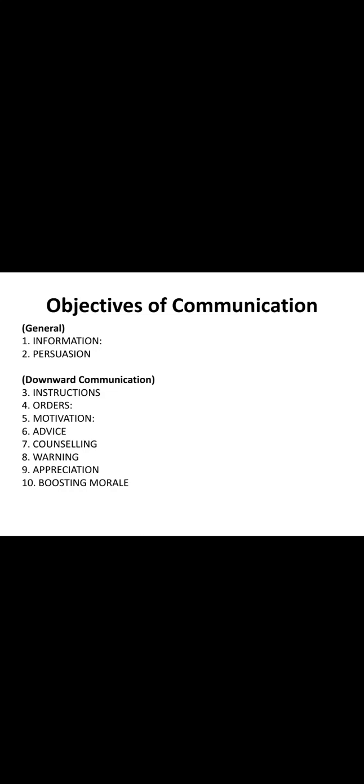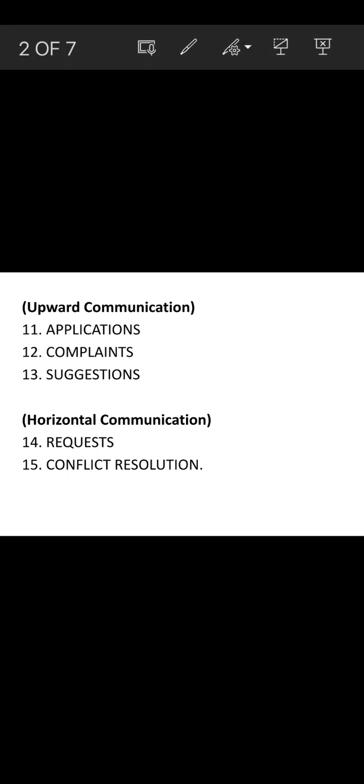The next objective is warning. Just as we give instructions and orders, we also give warnings. A warning means something that should not be done, or if done, serious action will be taken. Through downward communication we also give appreciation for somebody's good effort, which is another objective.